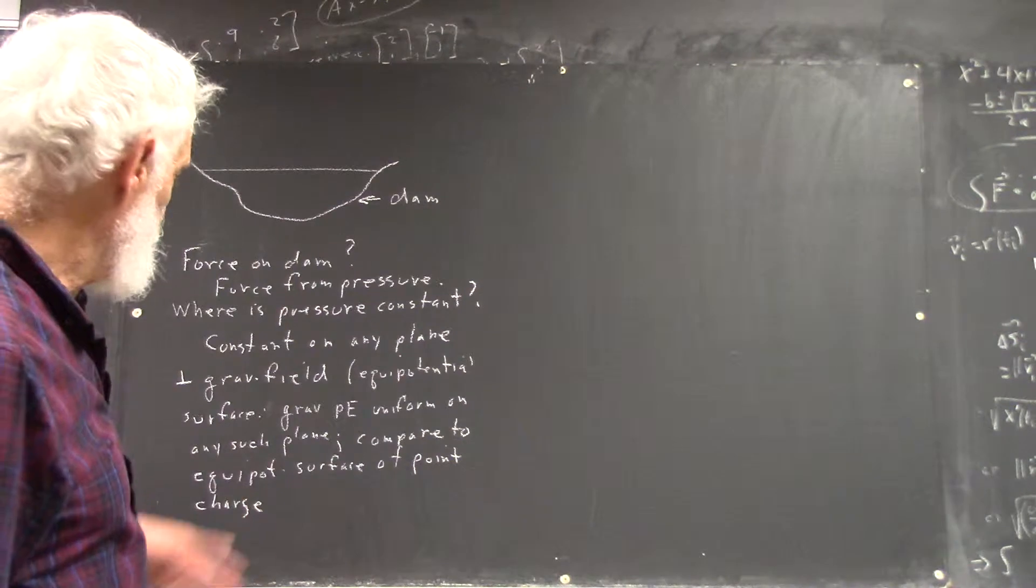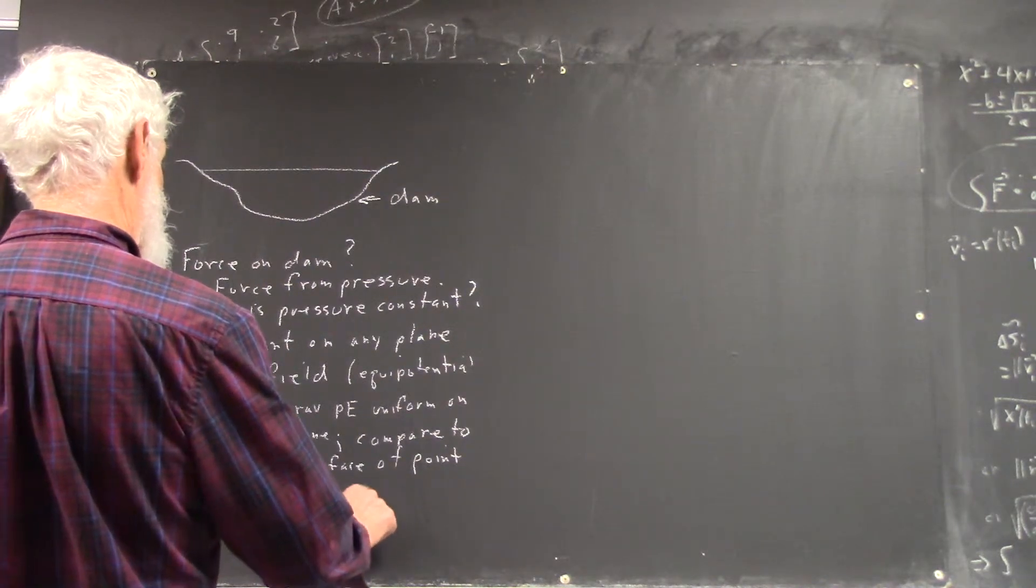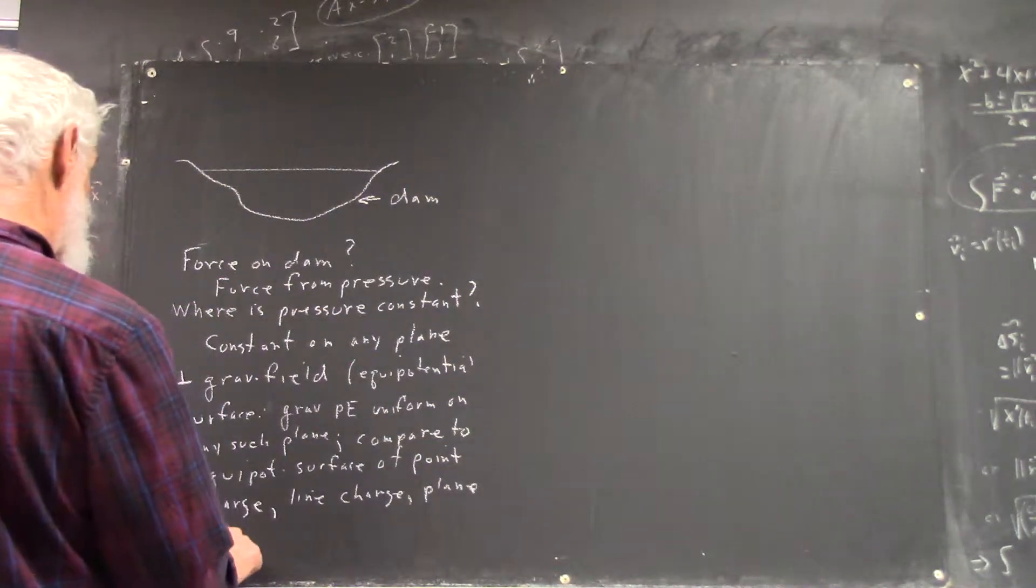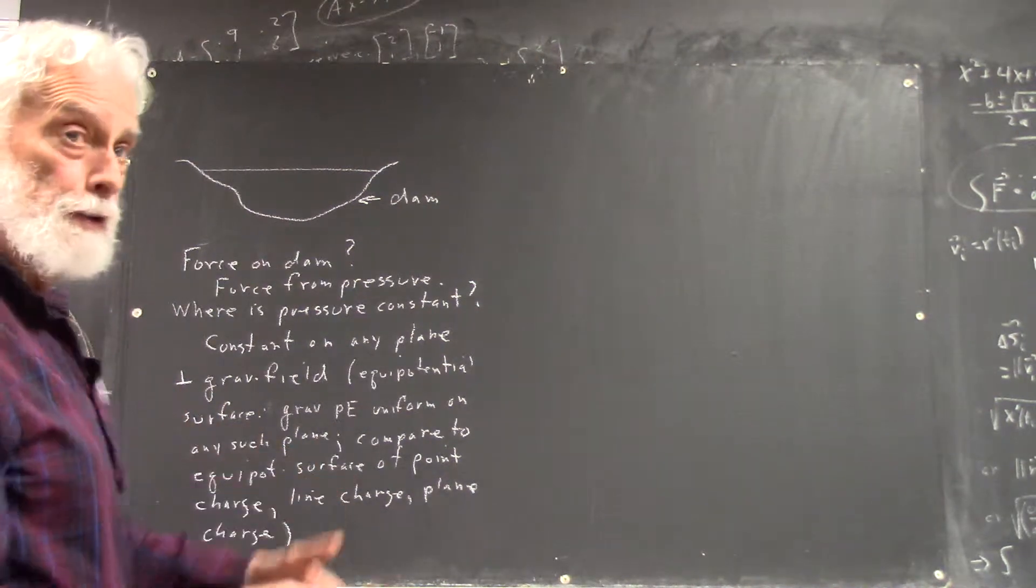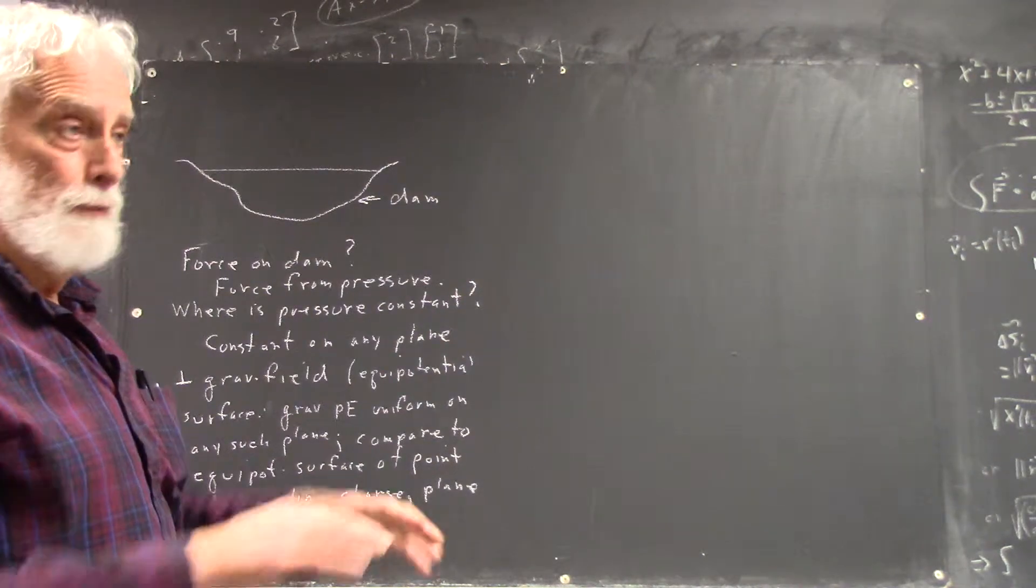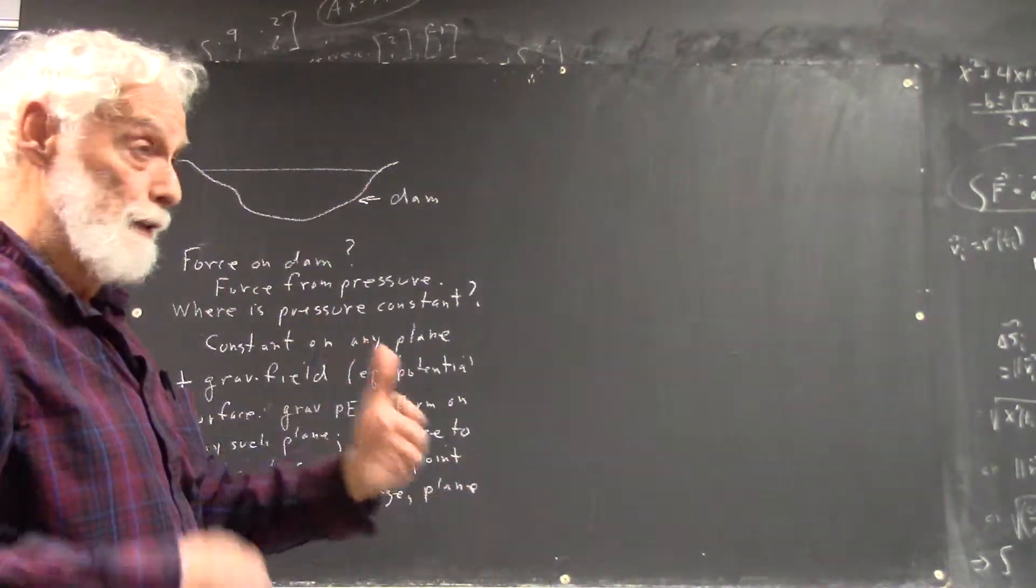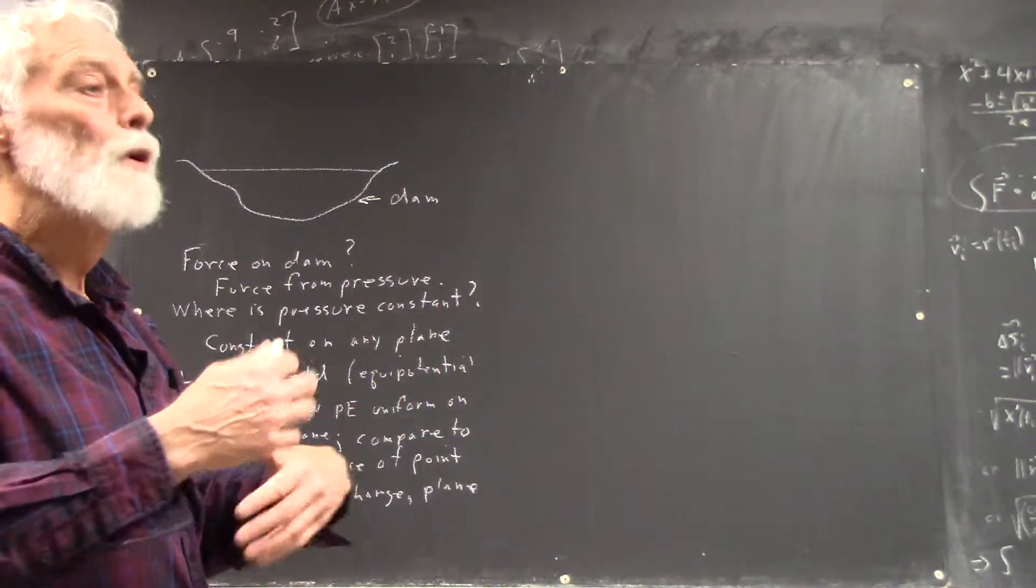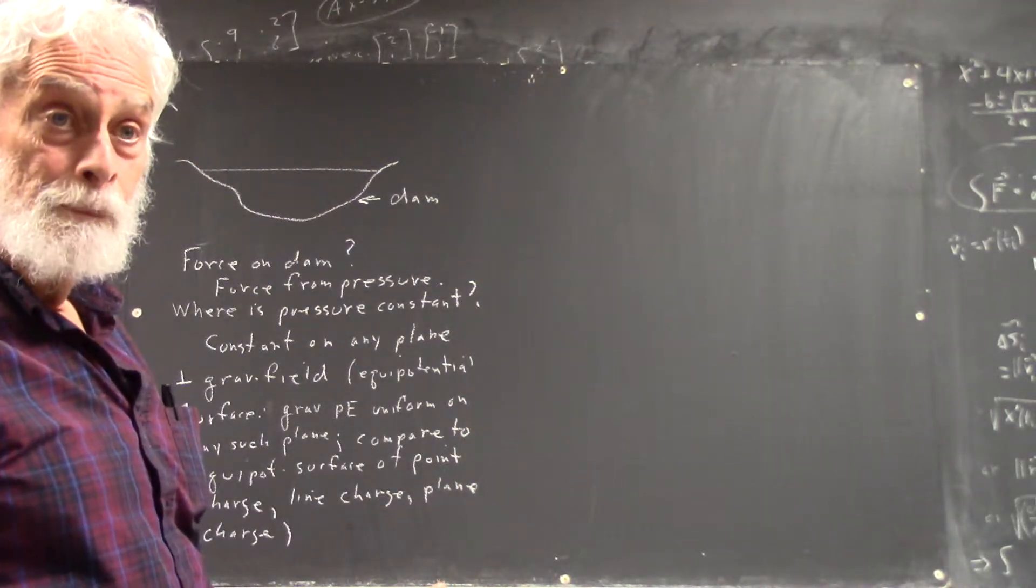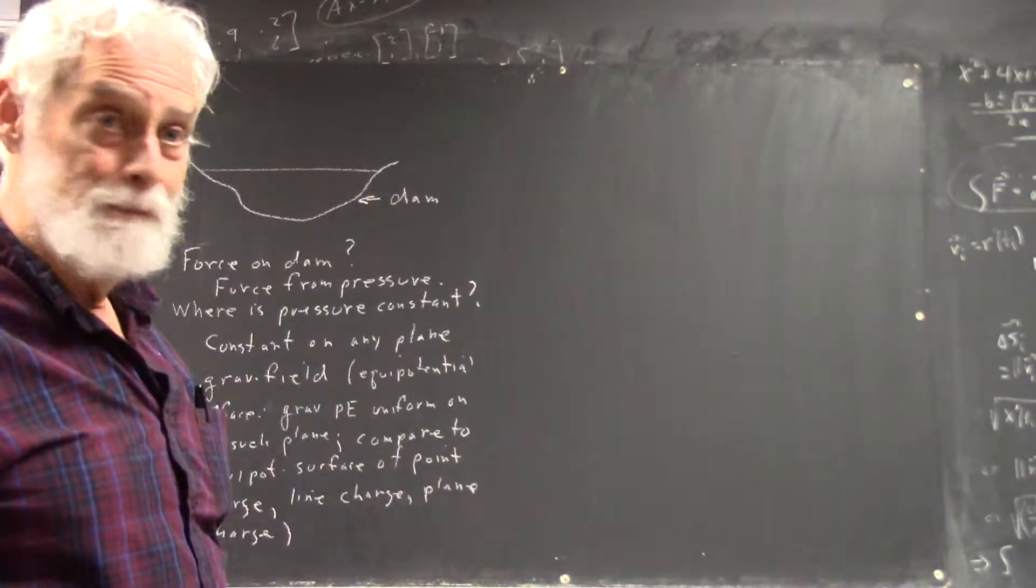You want to compare it to the equal potential surface of a point charge, or a line charge for a plane charge. What's the equal potential surface for a point charge? A given distance from the point? Well, it's a sphere concentric with the charge. So your equal potential surface is a sphere. Satellites orbit planets on equal potential surfaces. Otherwise they'd run out of fuel real quick.